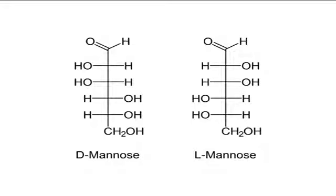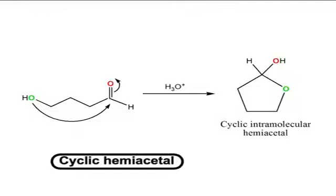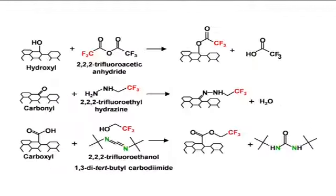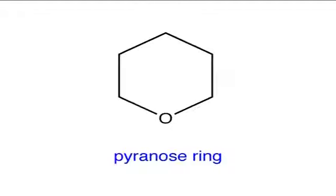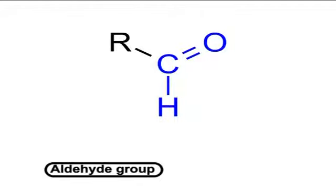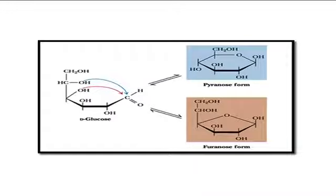Carbonyl groups of aldehydes and ketones are reactive and readily undergo attack by the oxygen atom of a hydroxyl group to produce a cyclic hemiacetal. Hemiacetal formation can occur within the same aldose or ketose sugar molecule — that is, the carbonyl group of a sugar molecule can react with one of its own hydroxyl groups, as illustrated in Figure 3. The six-membered sugar ring that results from the reaction of an aldehyde group with the hydroxyl group at C6 is called a furanose ring, as shown in Figure 5.